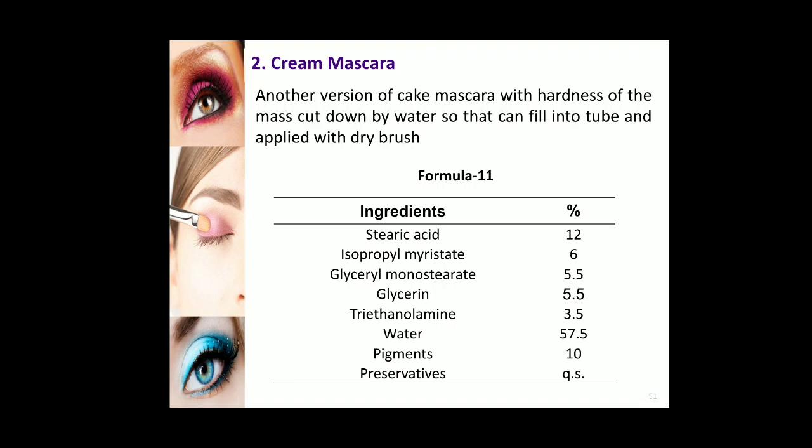Waterproof mascaras are designed to stay intact on the eyes for a longer period. They do not smudge and are best for summer and monsoon seasons where there is too much humidity or temperature causing severe sweating. They are difficult to remove with an ordinary remover and require special oil-based makeup removers.